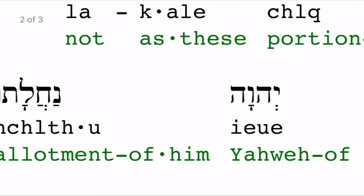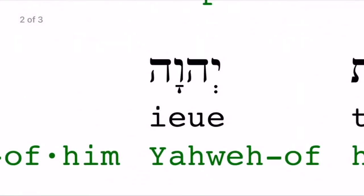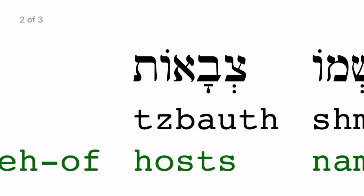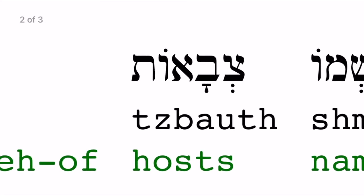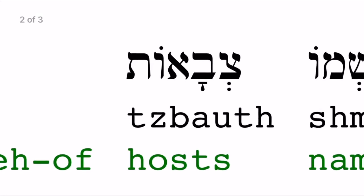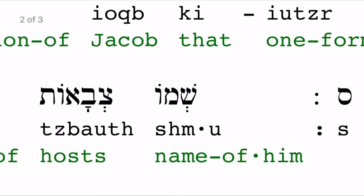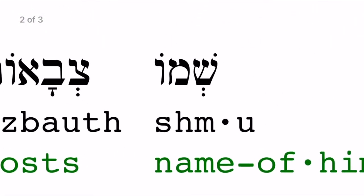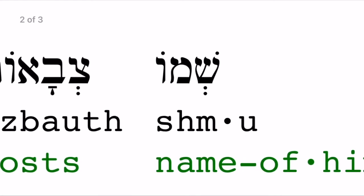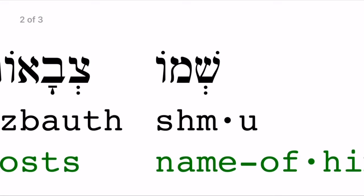Next we have 'yahawah,' which is the name of the Lord. Then we have 'tazaba awath,' which means 'armies' or 'hosts.' And lastly we have the Hebrew word of the day, which is 'sham.' 'Sham' is the root word which means 'name,' and 'wa' at the end of the word means 'his,' so it will be 'his name.'